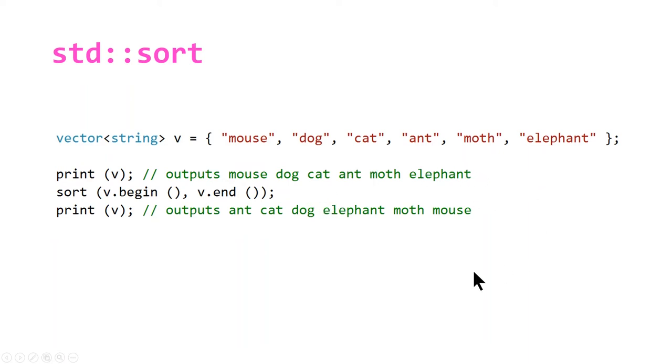If we call sort, it's going to rearrange it so that it's in the order you would find it in a dictionary, lexicographical order. So ant, cat, dog, elephant, moth, and mouse.